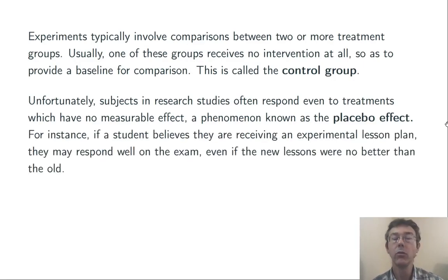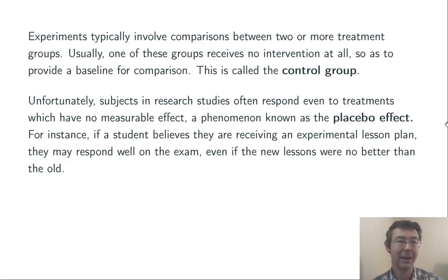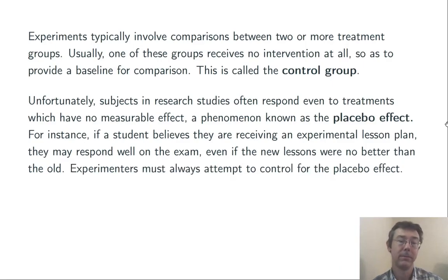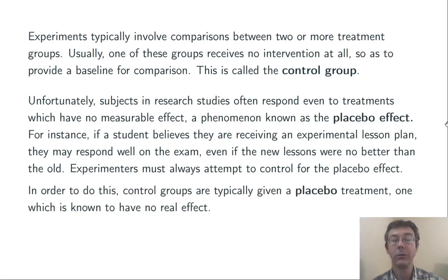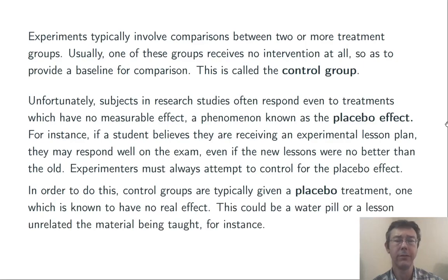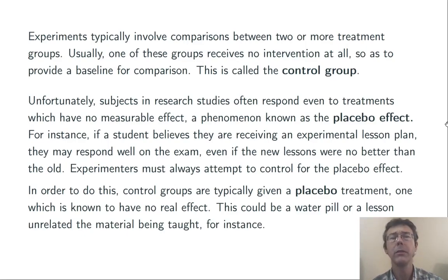For instance, if students in a study believe that they're receiving an experimental lesson plan, they may expect to do better on the exam, go in with more confidence, and might actually do better. So experimenters attempt to control for the placebo effect by using a placebo in the control group — a treatment that's known to have no real effect. This could be a water pill in a medical study, or a lesson unrelated to the material being taught. For example, maybe the students in the control group are just asked to watch cat videos.